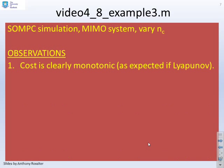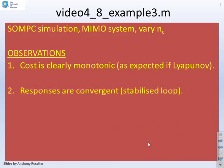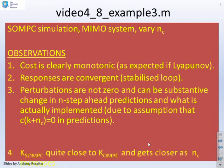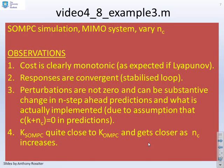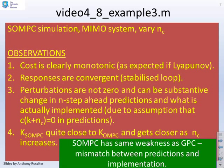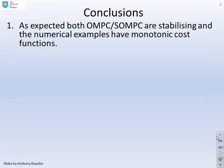So summary of the observations, the cost is monotonic again, as expected. The responses are convergent, as expected. The perturbation terms CK are not zero and can be substantive. KSOMPC is quite close to KOMPC and gets closer as NC increases. But clearly, SOMPC has the same weakness as GPC. There's a mismatch between the predictions and the implementation because you keep changing your mind when you re-optimize.